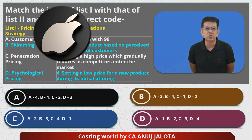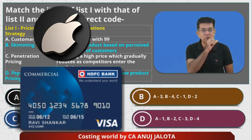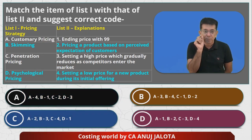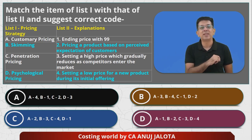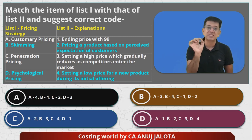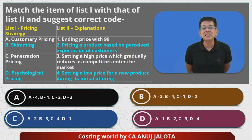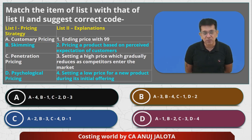Perceived value is the value that a customer assigns to a product — it may depend on the use of the product or the status associated with it. One fine day Apple comes out with an offer: the phone is available for ₹70,000 with an HDFC credit card. You will instantaneously buy it because the perceived value is ₹74,000–₹75,000 and today it's available cheaper. That pricing based on perceived value is called customary pricing. So A matches with 2.